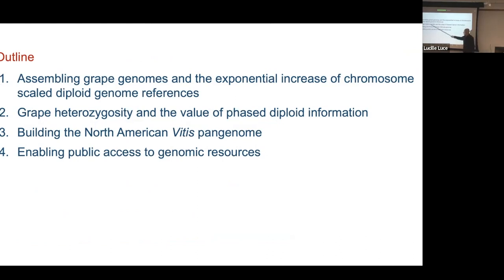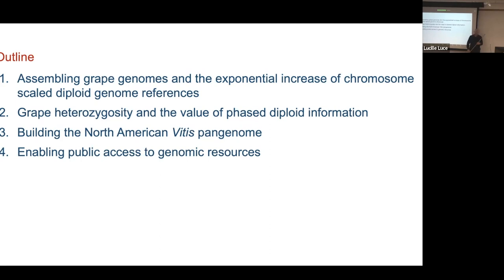The importance of grapevine heterozygosity: we domesticated grapevines by selecting hermaphroditic individuals from this highly heterozygous population of obligate outcrossers. Heterozygosity exists in our germplasm — we don't grow inbreds or nearly isogenic lines; we grow F1s that are highly heterozygous. I will then touch on North American wild Vitis species and how we've been using their genetic information to create a Vitis pan genome. And if time allows, I'll touch on our effort to make all the genomic information publicly available.